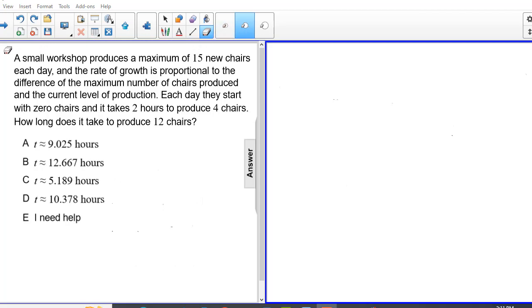A small workshop produces a maximum of 15 new chairs each day, and the rate of growth is proportional to the difference of the maximum number of chairs produced and the current level of production. Each day they start with zero chairs and it takes two hours to produce four chairs. How long does it take to produce 12 chairs?